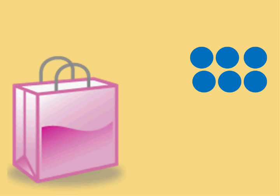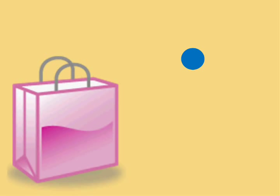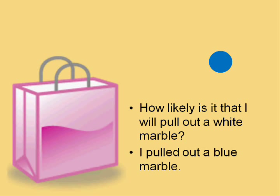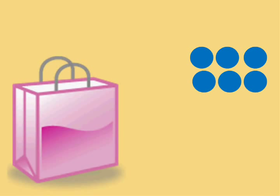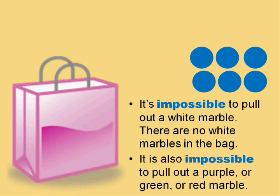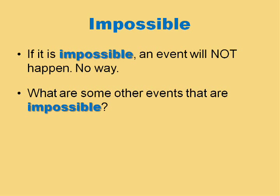Let's go back to the first example where I had all blue marbles. If I put all the marbles into the bag, how likely is it that I will pull out one white marble? I pulled out a marble and you can see it's blue. You know there are no white marbles in the bag, so there's no way to pull out a white marble — we say that it's impossible. If I have only six blue marbles, it is impossible to pull out a white, purple, green, or red marble. If an event is impossible, it means it will absolutely not happen.